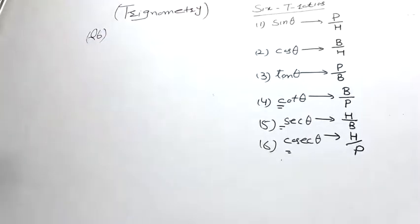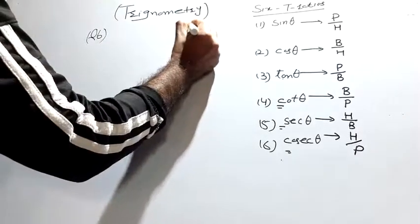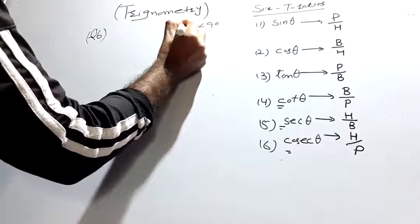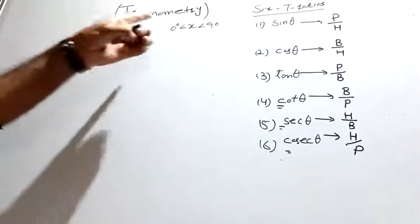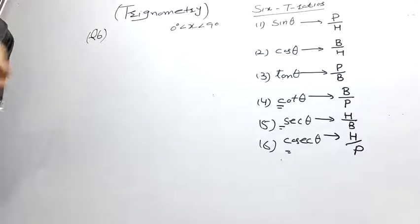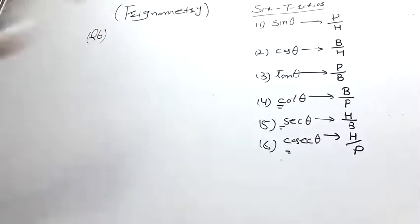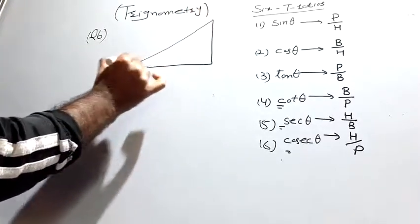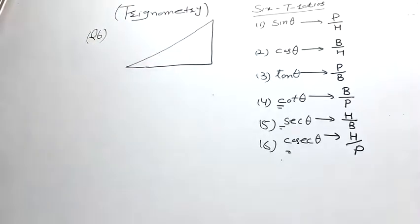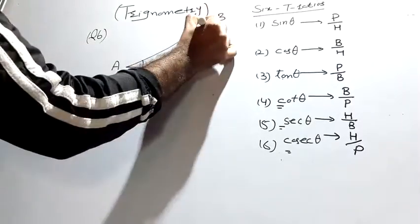Acute angles — what are acute angles? An angle is called acute if it is greater than 0 degrees but less than 90 degrees. So angle A and angle B are both acute angles in a right-angled triangle.